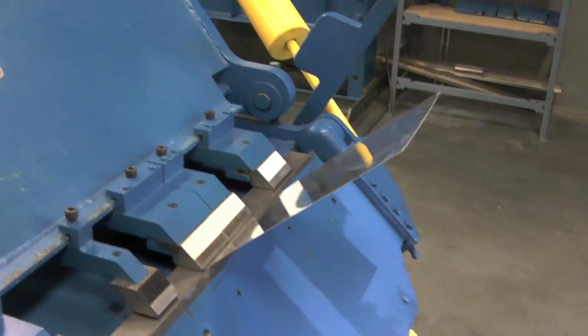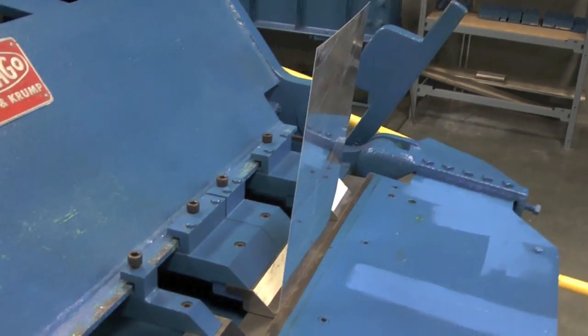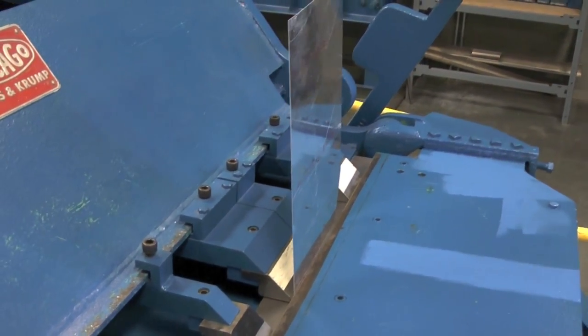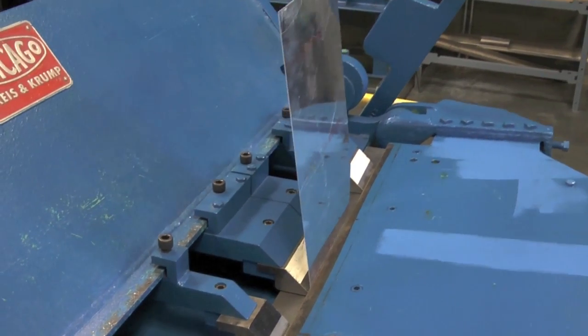2024 T3 has a spring back of about 10%. Bend the material to 99 degrees and it will return to 90.